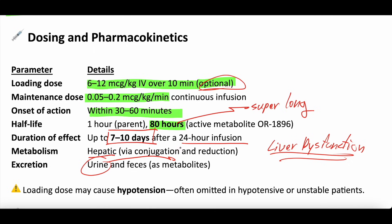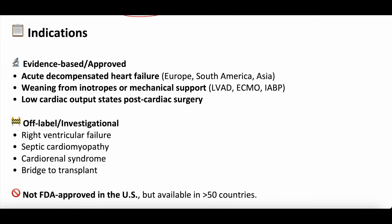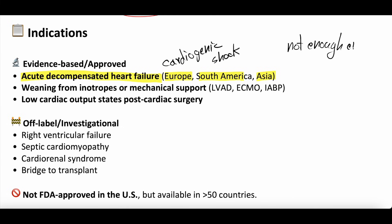The loading dose is optional and not usually given as it can cause hypotension, which is why it's typically not given in unstable patients. As for indications: in Europe, South America, and Asia, levosimendan is an approved medication for acute decompensated heart failure or cardiogenic shock. It is not approved in the United States. Resources cite reasons such as not enough evidence and possible worse long-term cardiac outcomes.